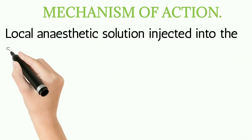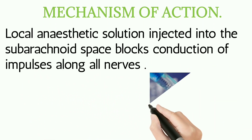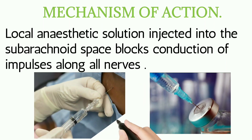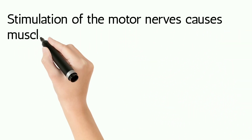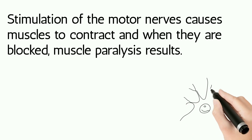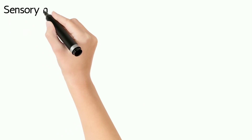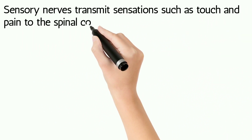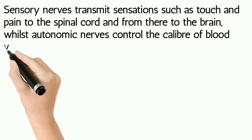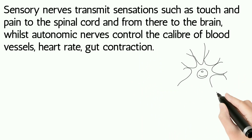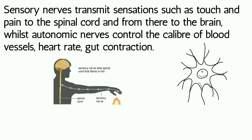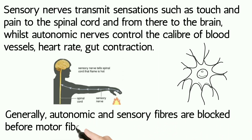Mechanism of action: Local anesthetic solution injected into the subarachnoid space blocks conduction of impulses along all nerves. Motor nerve stimulation normally causes muscle contraction — when motor nerves are blocked, muscle paralysis results. Sensory nerves transmit sensations such as touch and pain to the spinal cord and from there to the brain — when blocked, sensation is lost. Autonomic nerves control blood vessel calibre, heart rate, and gut contraction — when blocked, autonomic effects such as vasodilation and hypotension occur. So motor fibres, autonomic fibres, and sensory fibres are all blocked.